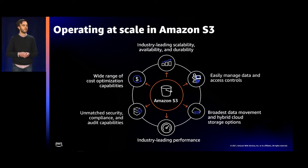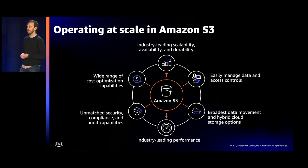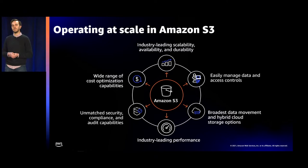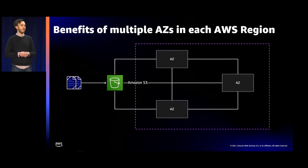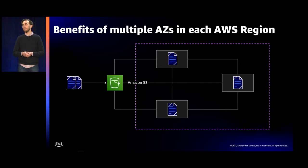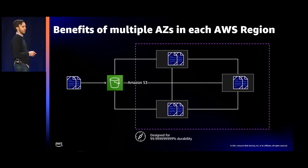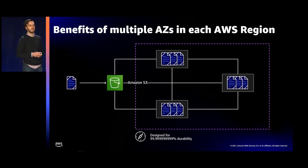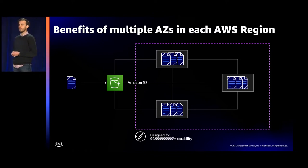This includes S3 Glacier Deep Archive, which delivers the lowest cost storage in the cloud. S3 also provides industry-leading scalability, availability, and durability because of S3's multi-availability zone resiliency model. By default, S3 storage classes redundantly store data across a minimum of three physically separated AWS availability zones in a single region. These availability zones have independent power, cooling, and networking, and are connected via ultra-low latency networks.